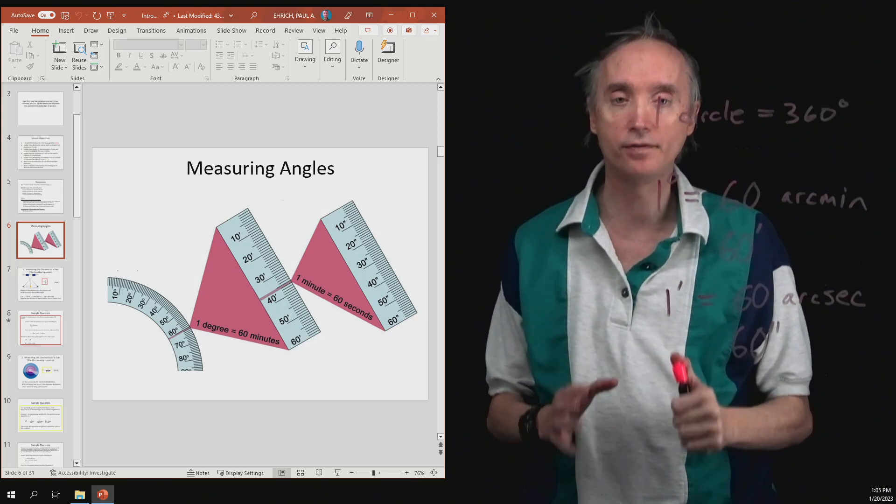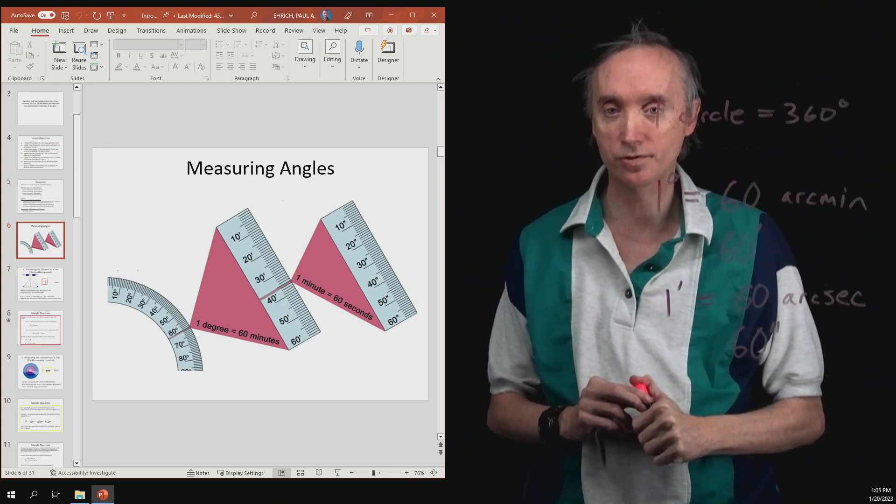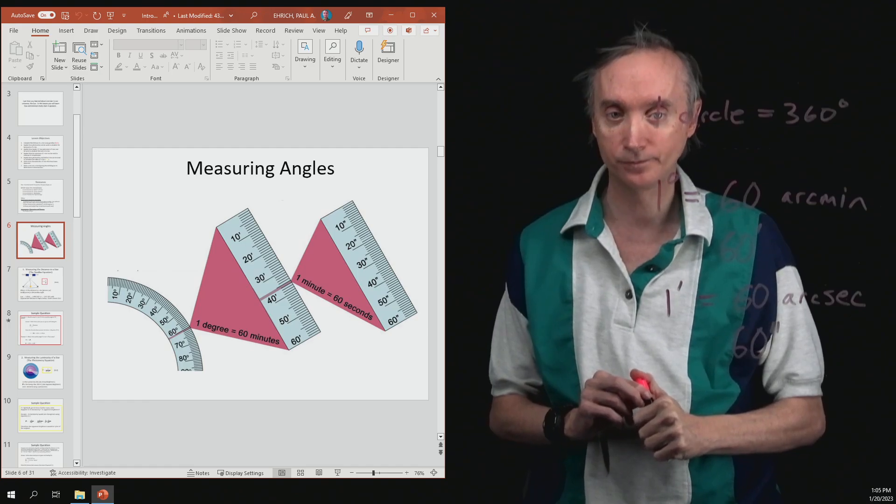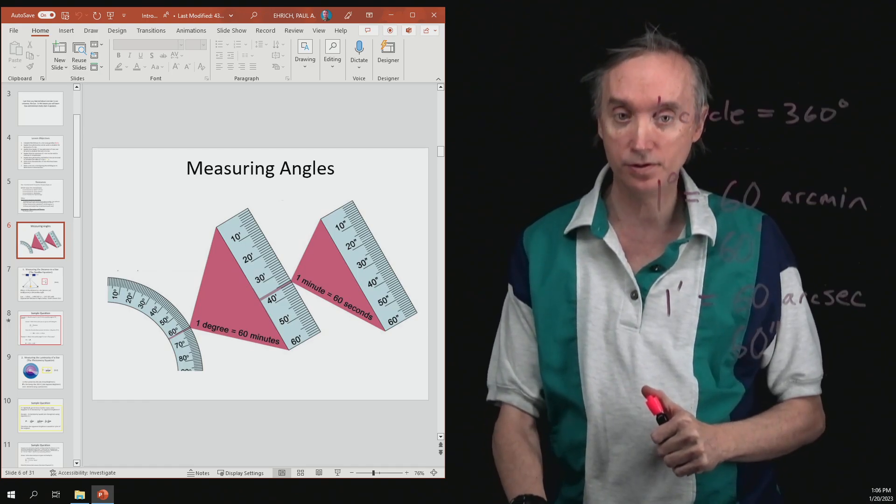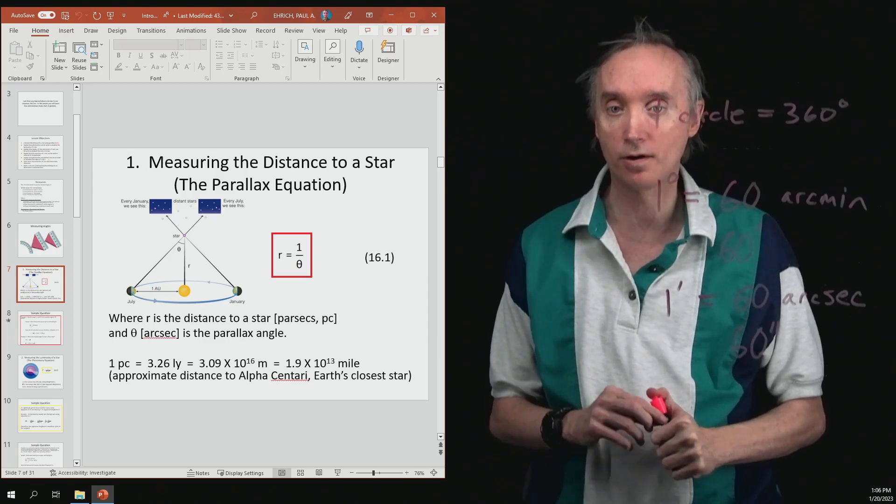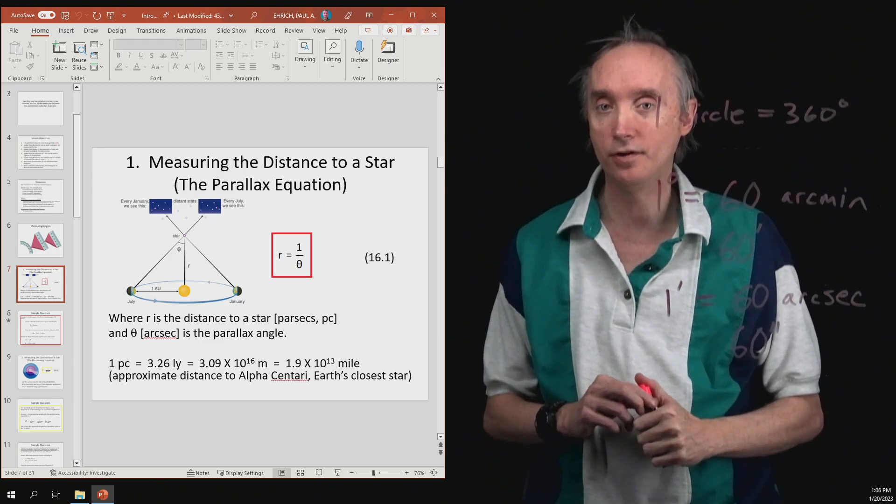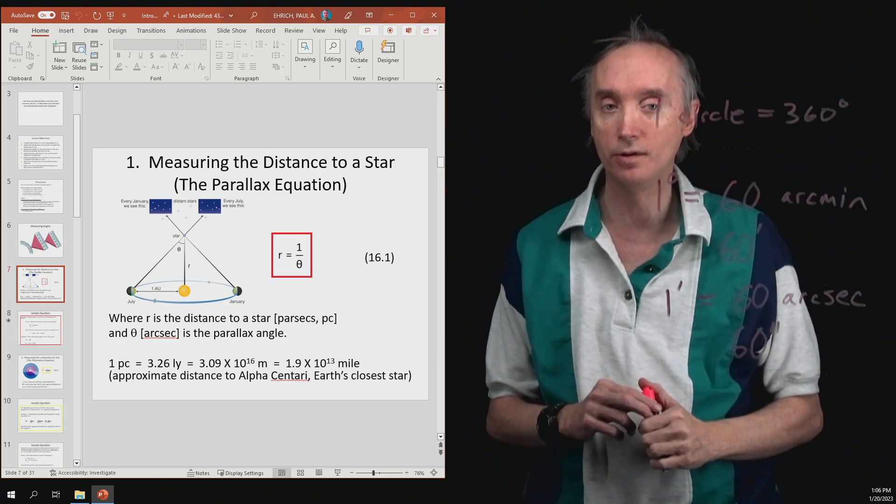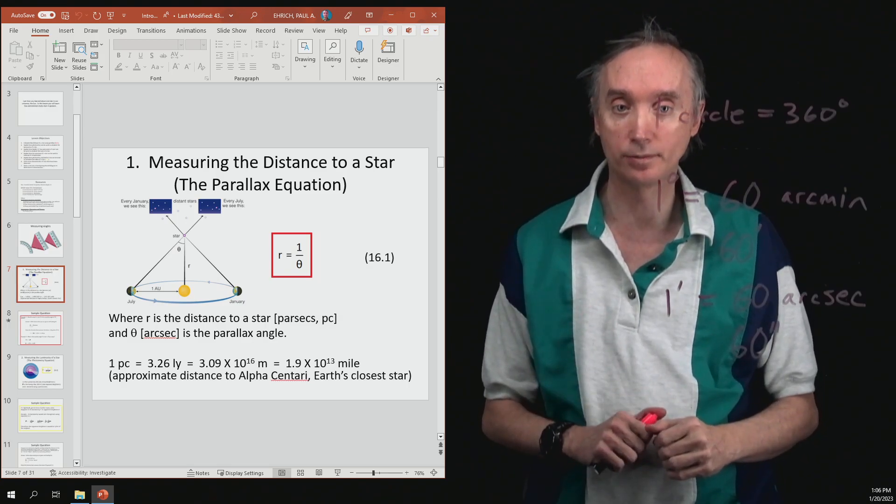That's the kind of angles that astronomers are able to measure. And so what we're going to do is use the concept of the arc second to figure out the distance to a star, which we're going to do in our next segment.